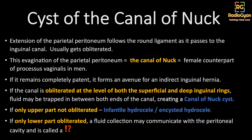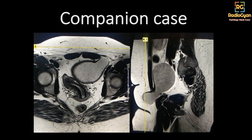When the upper portion is obliterated, we get an encysted hydrocele or an infantile hydrocele. When only the lower portion is obliterated, we get something known as a hydrocele of the canal of Nuck. This is a companion case to that. Dr. Vivek also got it right. What we see here is a cystic fluid-intensity lesion going towards the left inguinal canal — this is a case of hydrocele of the left canal of Nuck.